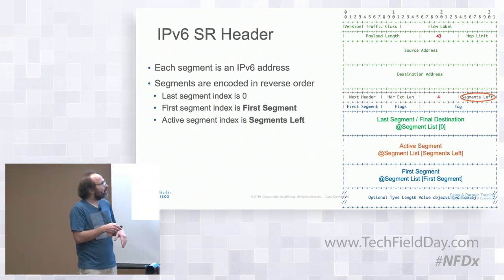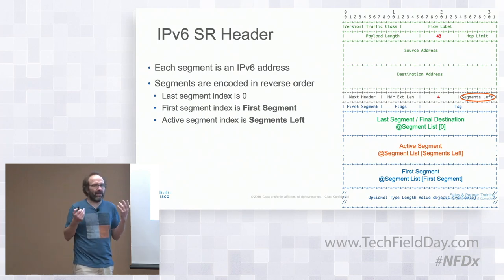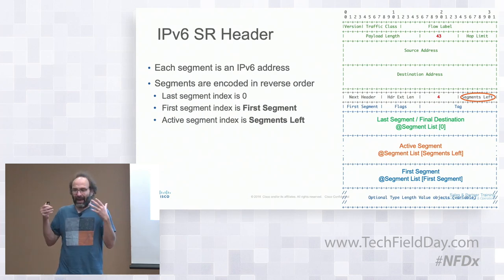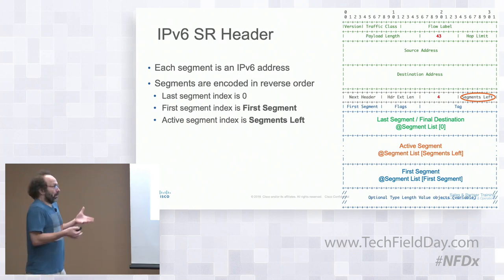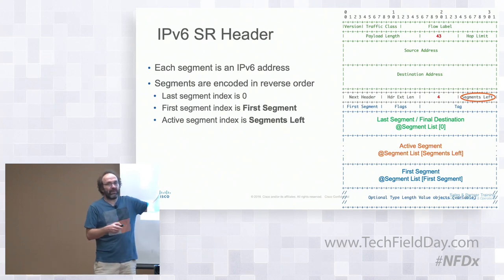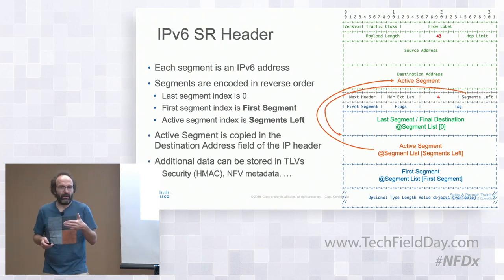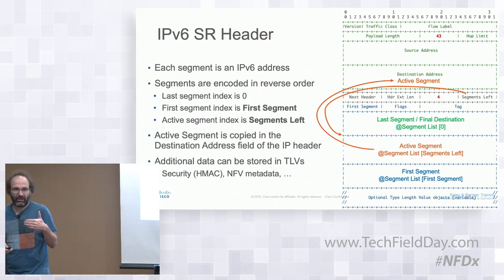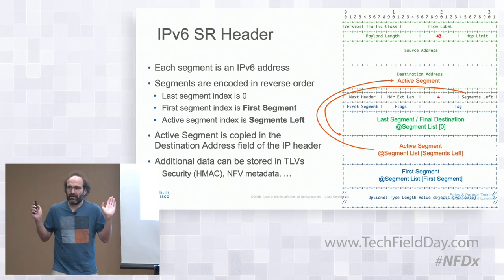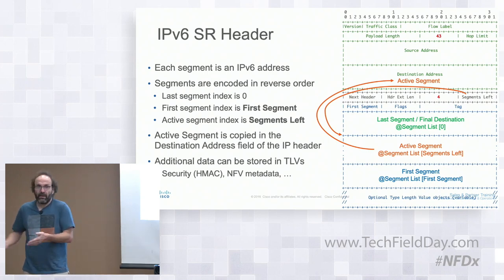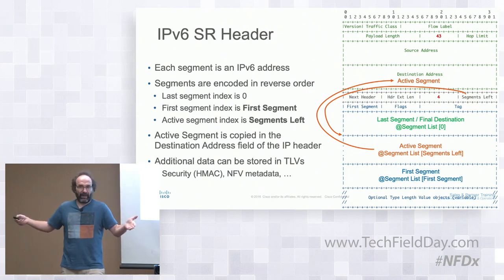The second important field is 'segments left'—a pointer to the active segment currently being used for forwarding. The active segment is always copied into the IPv6 destination address. This means even a router that is not SRV6-aware can forward SRV6 packets, so you can run SRV6 over the internet or commodity hardware with plain IPv6 routing.